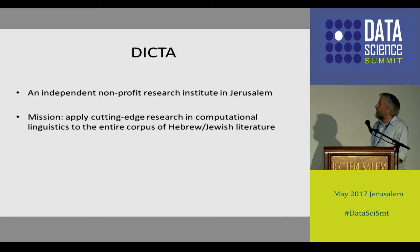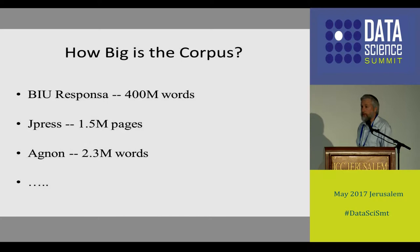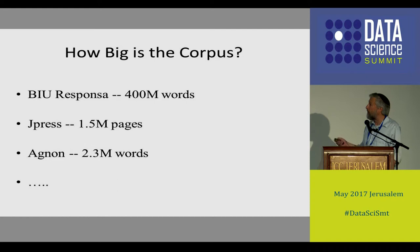Just to give you a sense of how big the entire corpus of Hebrew and Jewish literature is: the Bar Ilan Responsa project now includes about 400 million words. J Press, a collection of newspapers in Hebrew, Yiddish, and other languages, has 1.5 million pages. Shai Agnon alone has 2.3 million digitized words. So we're talking in the order of probably a few billion words if we get the whole corpus together.